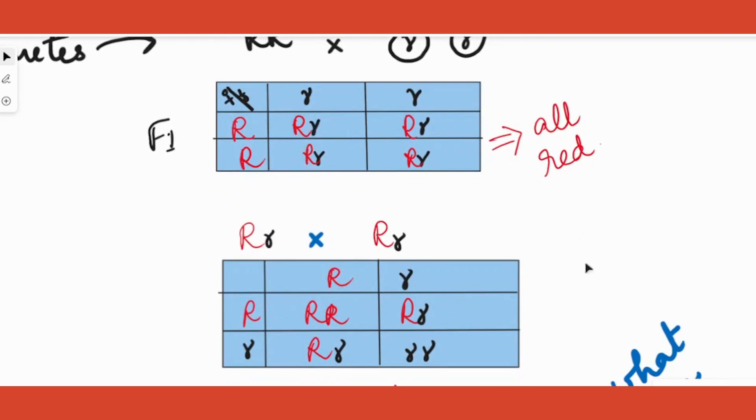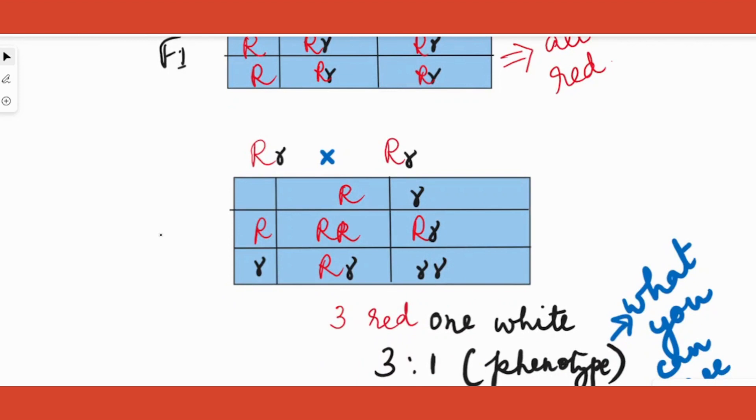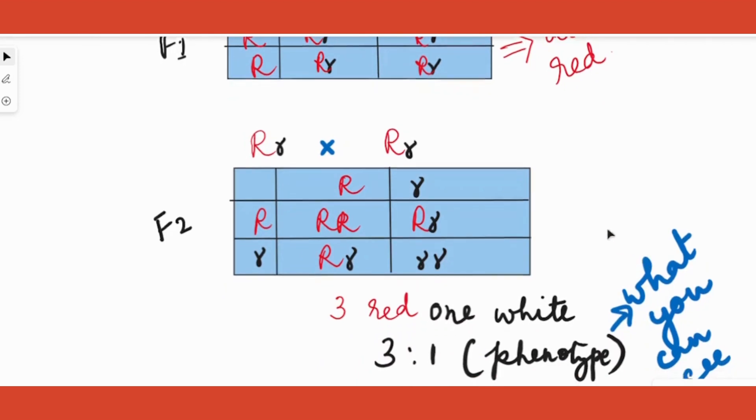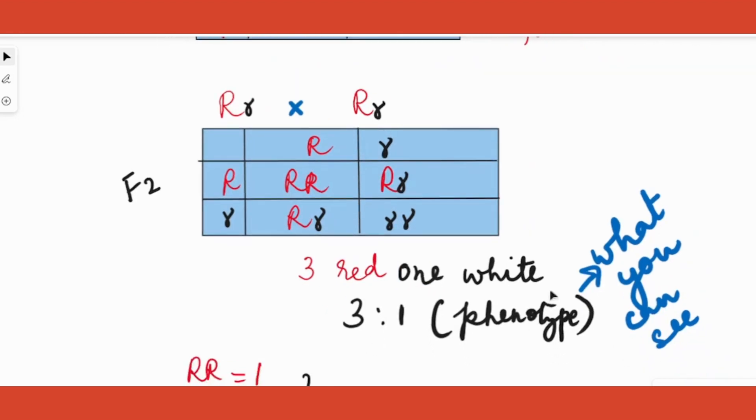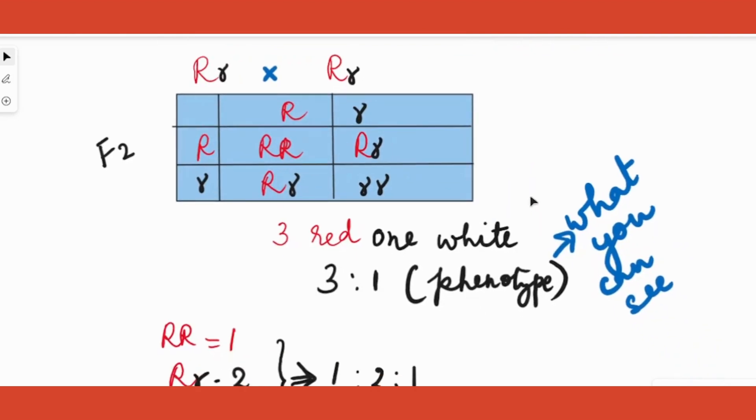Now as you can see here, in all the cases we got red flowers. If I self-pollinate one of them, I would get the F2 generation wherein this is the F2 generation, wherein I would find that three of them are red. Whenever I see capital R it means that the dominant allele has expressed. In other words, in our case it is the red flower - we get the red trait for the flower. So in three cases we have red and in one case we have the white as the phenotype.